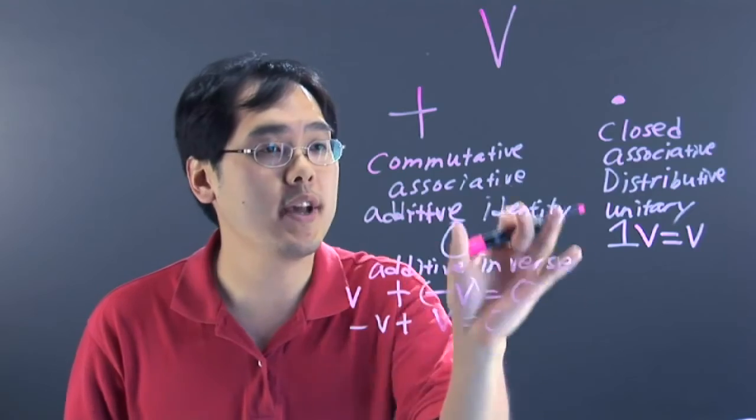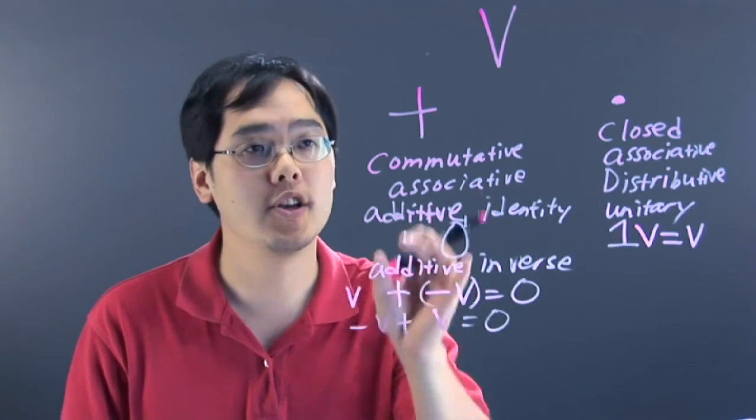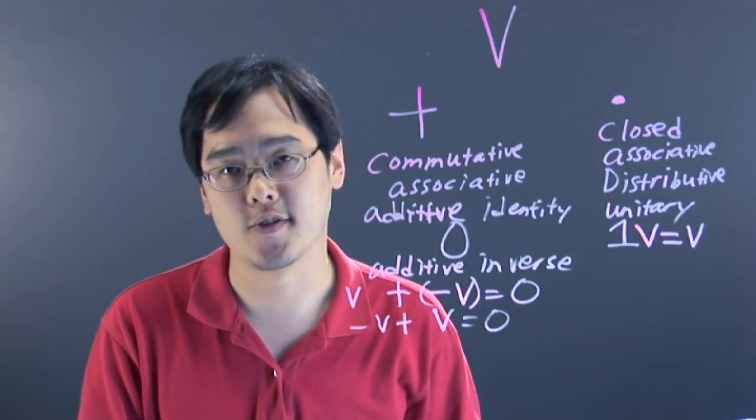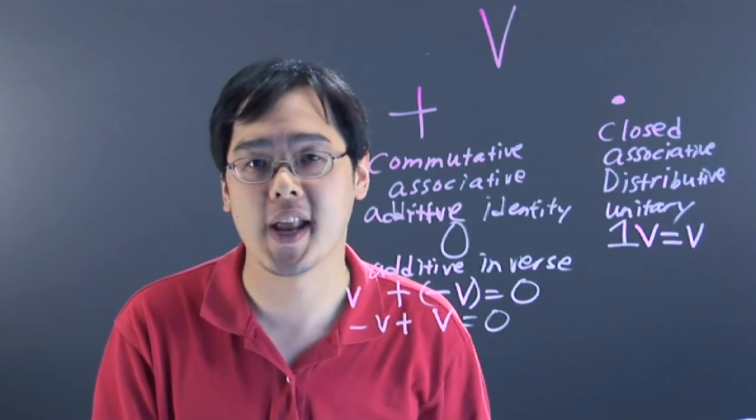In summary, if a set of vectors satisfies all these properties under vector addition and scalar multiplication, it is a vector space. I'm Jimmy Chang, and that answers the question: what is an abstract vector space in algebra?